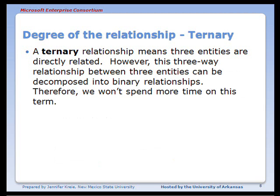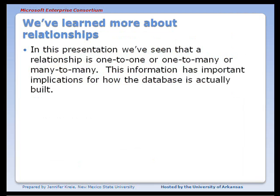A ternary relationship involves three entities directly related; however, it can be decomposed into binary relationships, so we will not cover it further. In this presentation, we've looked at relationships in much greater detail. They can be one-to-one, one-to-many, or many-to-many, and they can be unary, binary, or ternary.